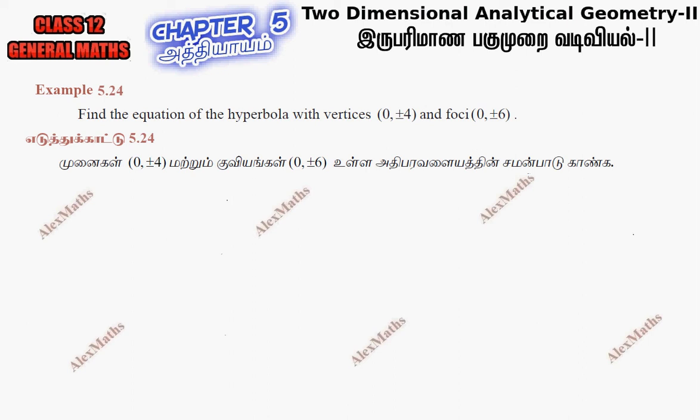Hi students, this is Alex here. Example 5.24: Find the equation of the hyperbola with the vertices (0, ±4) and foci (0, ±6).